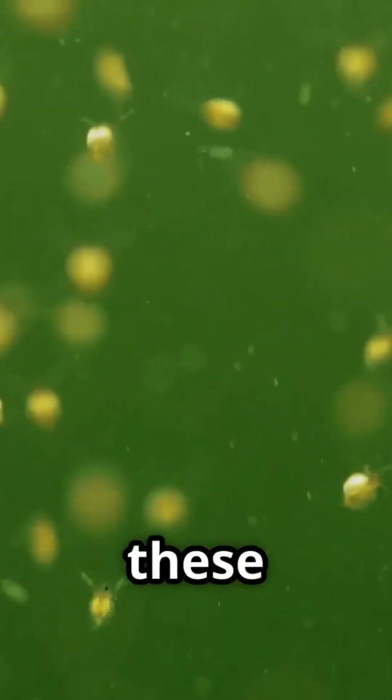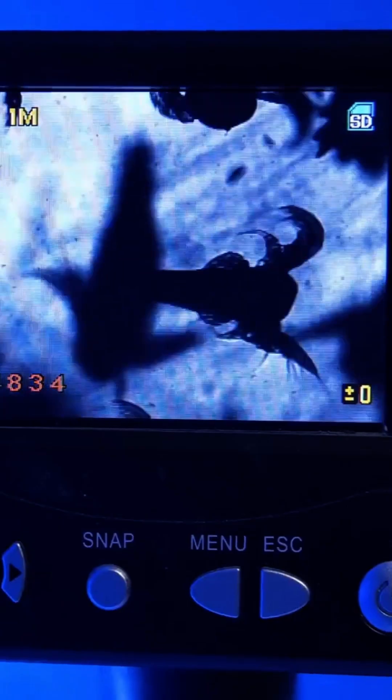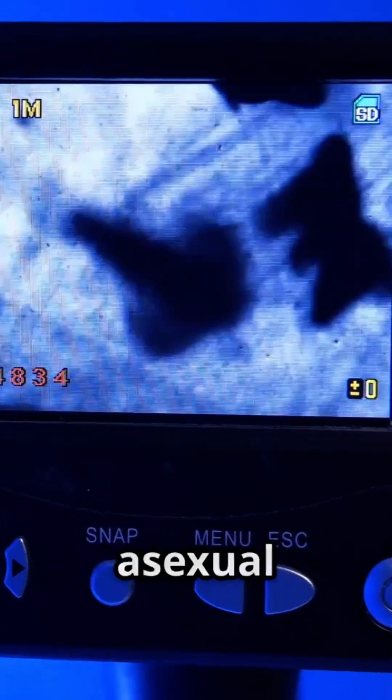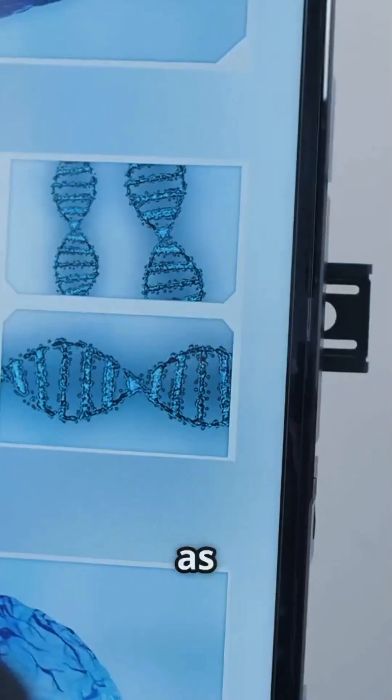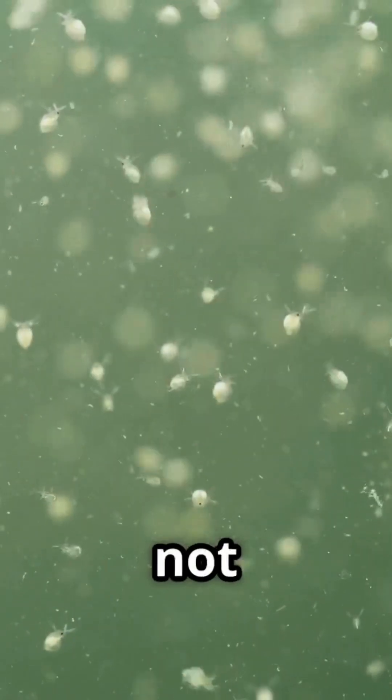Measuring just about 150 to 700 microns in length, these tiny invertebrates have managed to exist for tens of millions of years without sexual reproduction, relying solely on asexual cloning. Remarkably, despite the genetic drawbacks often associated with asexual reproduction, such as the build-up of harmful mutations, bdelloid rotifers have not only endured but thrived, showing few signs of typical aging processes.